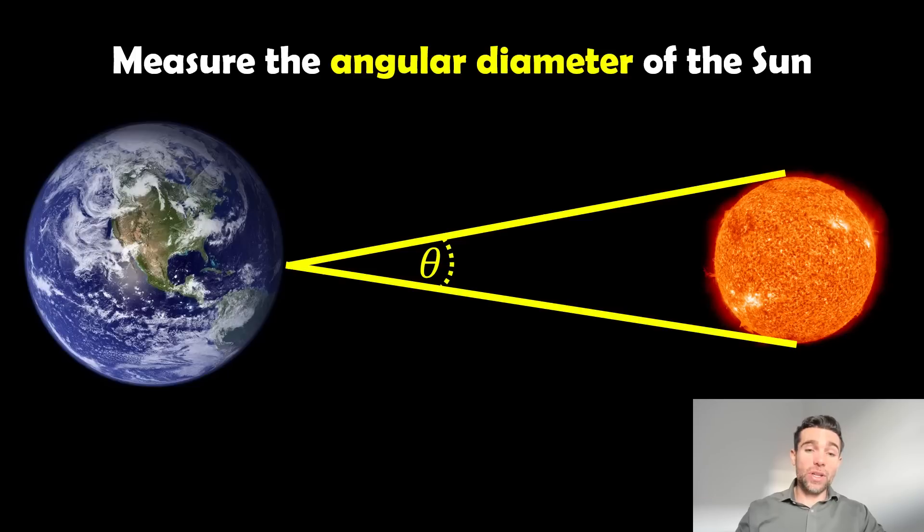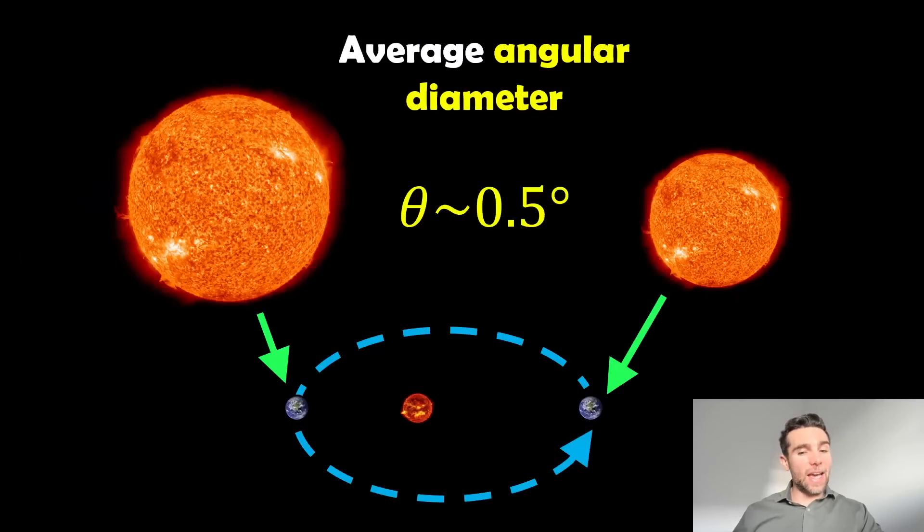If the Sun was closer it would have a bigger angular diameter because the angle increases. If it was further away it would be smaller, so the angular diameter would be less. Because Earth is orbiting around the Sun, it gets further away and closer during one year, so the angular diameter of the Sun does change.